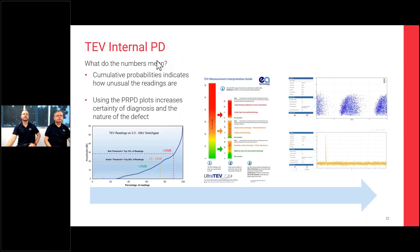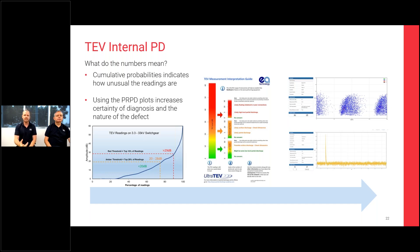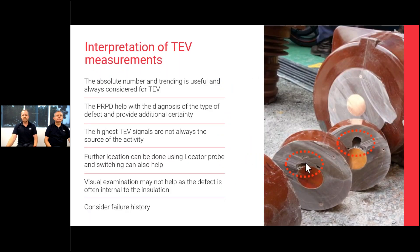For TEV: the cumulative probability database shows 75% of readings are below 20 dB, the next 15% are 20–28 dB, and the top 10% are 29–60 dB. When internal void discharge sites are active, higher energy sparks produce higher dB levels, so the TEV amplitude can be trended meaningfully. When sparks jump an increasing gap, the decibel level rises, allowing trending over time. However, the highest TEV signals are not always where the source of activity is — further testing and hunting around is required.